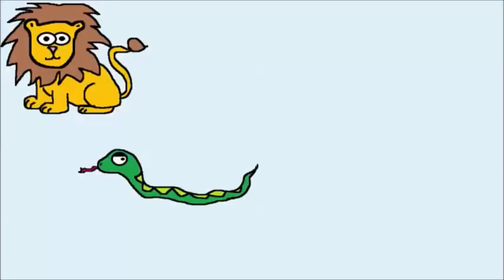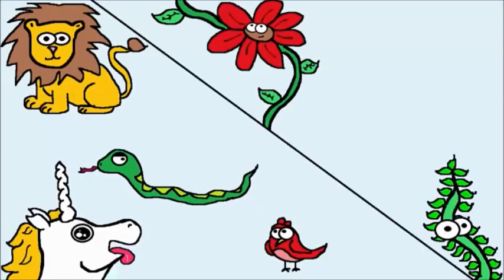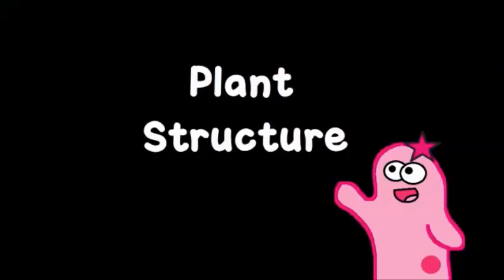You know how there are many different types of animals? Well, there are many different types of plants as well. To get to plant structure, we need to outline two major plant categories, vascular and non-vascular.